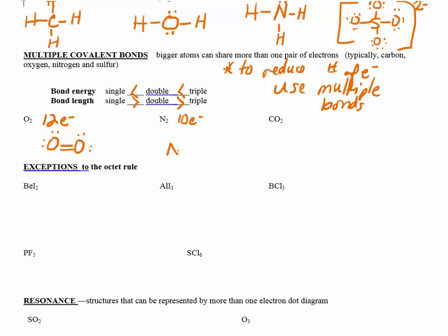For N₂: each nitrogen has five valence electrons, so five plus five gives ten electrons total. Starting with a double bond and lone pairs, each atom appears to have eight, but counting electrons gives twelve or fourteen — way too many. Even a double bond gives twelve, still too many. This means you need a triple bond. With a triple bond: two, four, six, eight for each nitrogen, and total count: two, four, six, eight, ten — ten electrons. Correct.